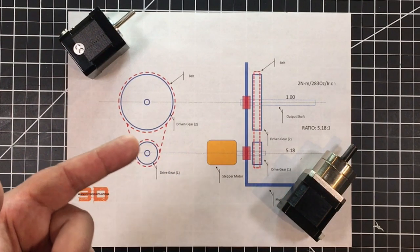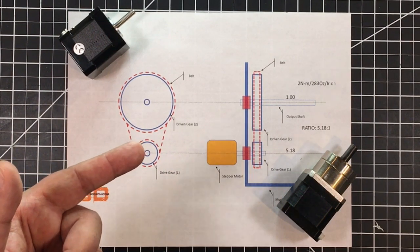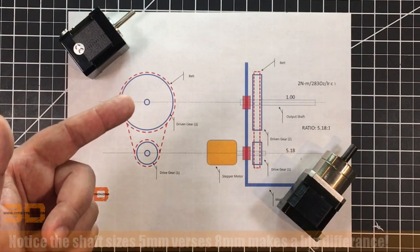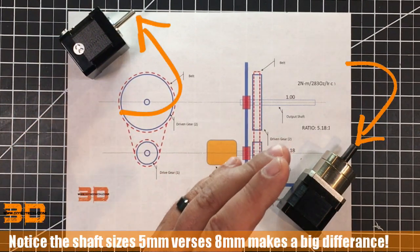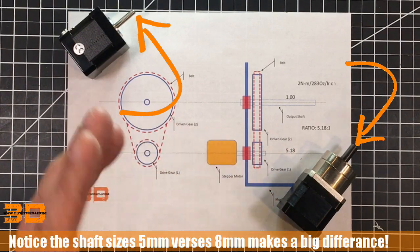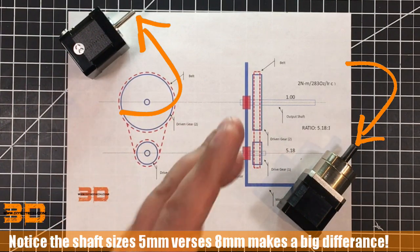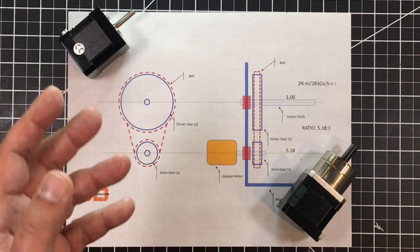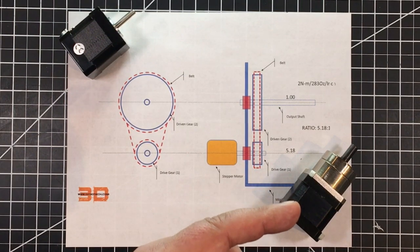So in other words, this drive gear has to turn 5.18 times to make one revolution on the driven gear. Now there are all kinds of different gear ratios you can buy in these, so that's not the only one. It's rather a lower one. I've seen them up to 27 to 1, etc. So you can get a lot of torque out of these guys.